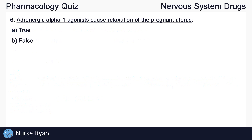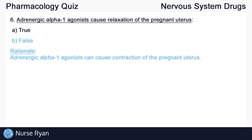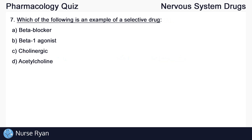Question number six: adrenergic alpha-1 agonists can cause relaxation of the pregnant uterus. The answer here is B, false, because adrenergic alpha-1 agonists can cause contraction of the pregnant uterus.